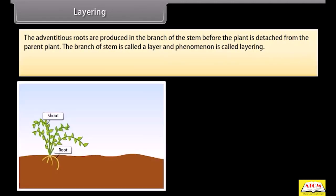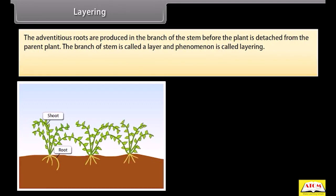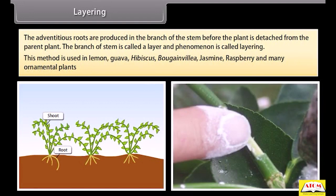In layering, adventitious roots are produced in the branch of the stem before the plant is detached from the parent plant. The branch of stem is called a layer and the phenomenon is called layering. This method is used in lemon, guava, hibiscus, bougainvillea, jasmine, raspberry, and many ornamental plants.